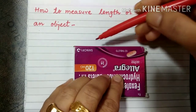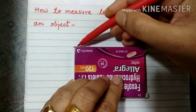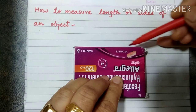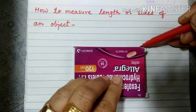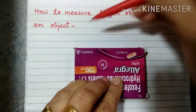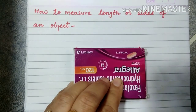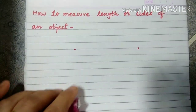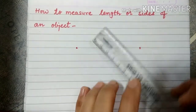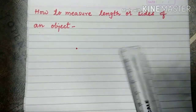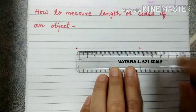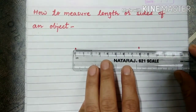Put dots at the corner of one of its sides. Put the dots very carefully. Now join both the dots using a scale — keep the ruler in such a way that it should join both the dots.